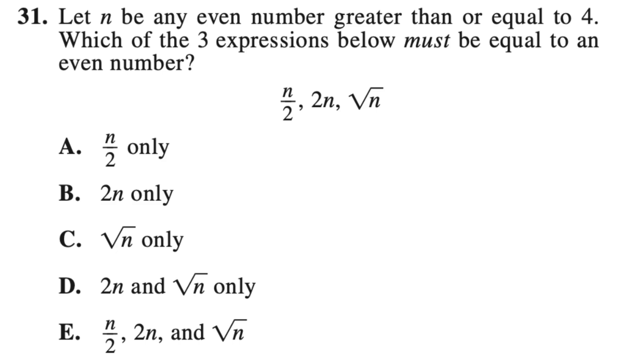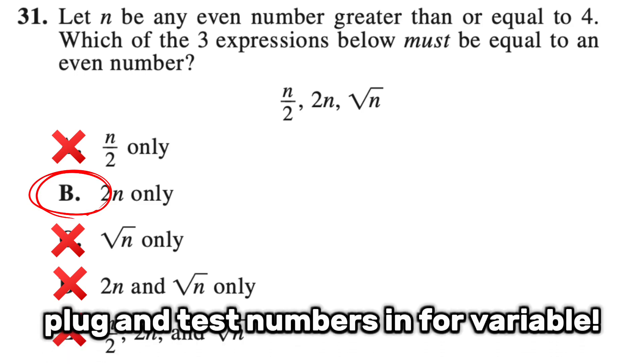So 6 over 2 is 3, so that's not even. So n over 2 does not work. 2 times 6 is 12, and that's even. So that works. So 2n works. And the square root of 6 is definitely not even. So the answer you can easily tell is b. The first strategy is to just plug numbers in when you see a variable to save as much time as possible.